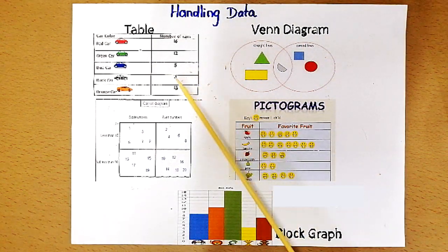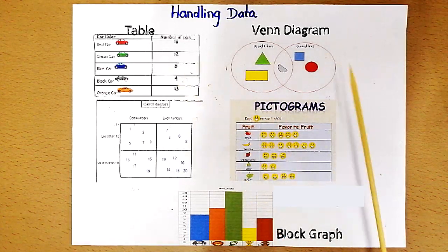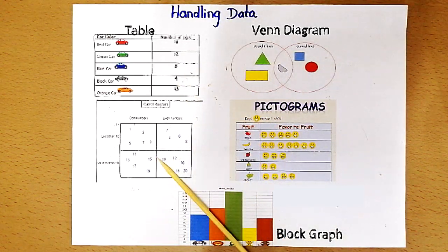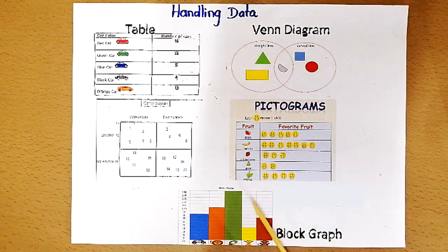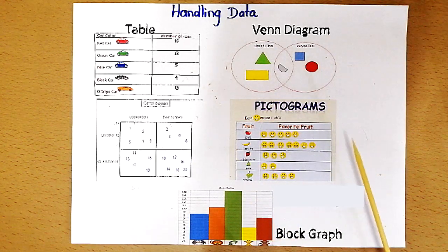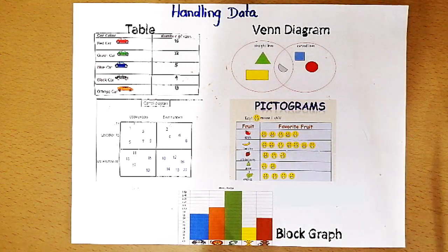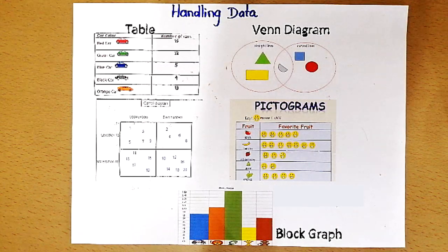You can represent the data in lists or tables, Venn diagram, pictograms, and block graphs. And in today's class we start with the simplest and the easiest one which is a list.